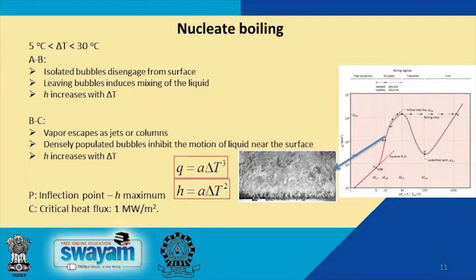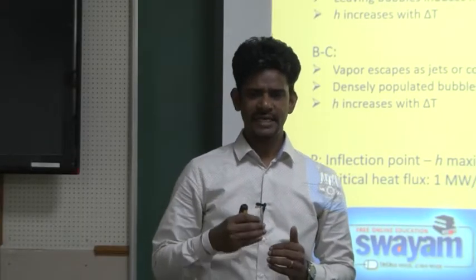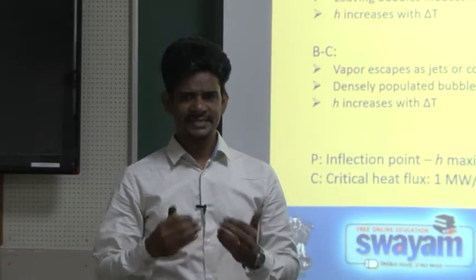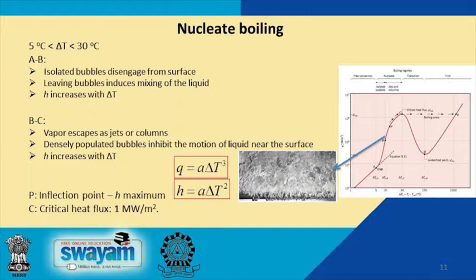The second regime is nucleate boiling, occurring over a range of delta T from 5 to 30 degrees Celsius. This regime can be split into two parts. Between points A and B, individual bubbles form on the surface and continuously disengage. This continuous bubble formation and disengagement induces local mixing of fluids, and beyond free convective mixing, the bubble-induced mixing enhances the heat transfer rate, so the heat transfer coefficient increases with delta T.